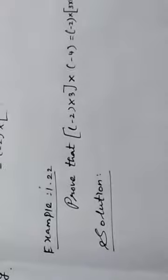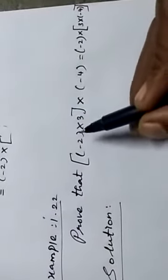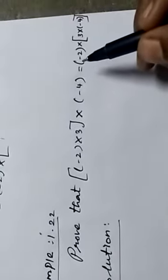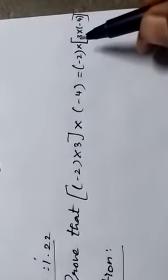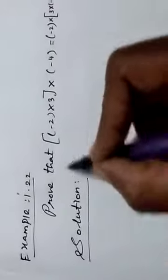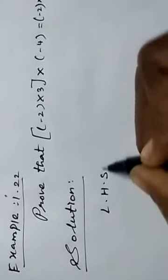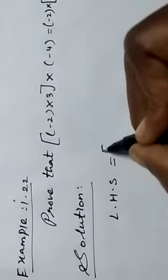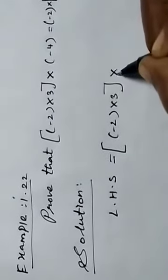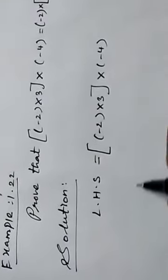Let us see the example. Example 1.22: Prove that (minus 2 into 3) into minus 4 equals minus 2 into (3 into minus 4). We take the left-hand side solution. LHS equals (minus 2 into 3) into minus 4. First, we find the solution for the bracket inside values.